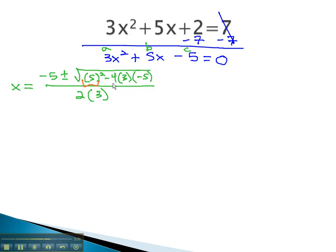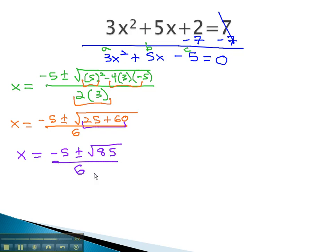Start simplifying by doing the multiplication and the exponents, to get x equals negative 5 plus or minus the square root of 25 plus 60, all over 6. Adding inside the radical tells us that x is equal to negative 5 plus or minus the square root of 85, all over 6.